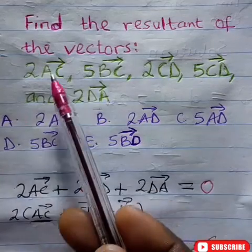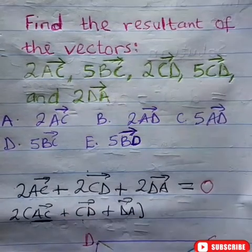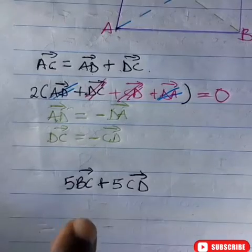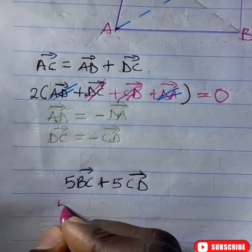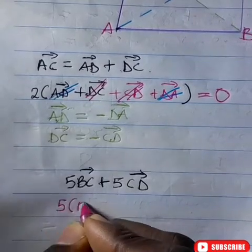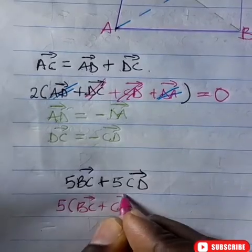Next, so we are done with the sum of this. This and this will be equal to zero. So we can go with 5BC and 5CD. So now we can write this and write this as 5 into BC plus CD.